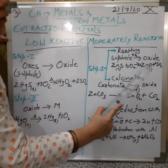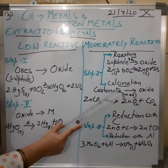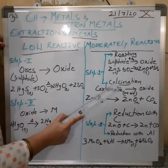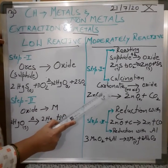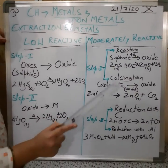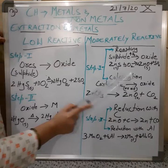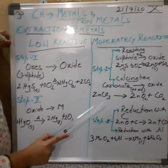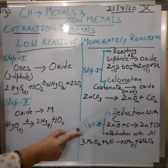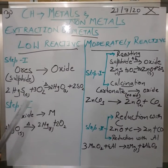The product obtained from roasting is the oxide. Similarly, the heating process is used for carbonate ores but in the presence of very little or no air — this is called calcination. For example, zinc carbonate is converted to zinc oxide along with carbon dioxide.